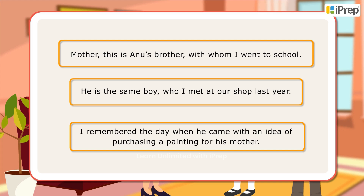In the first sentence, the relative clause whom is used as the object of a preposition. In the second sentence, the relative clause is introduced by the relative pronoun who. In the last sentence, the defining clause is introduced by when, as in the sense of 'in which.'